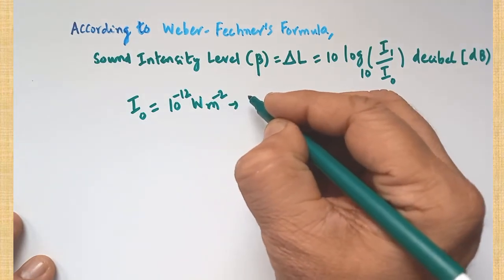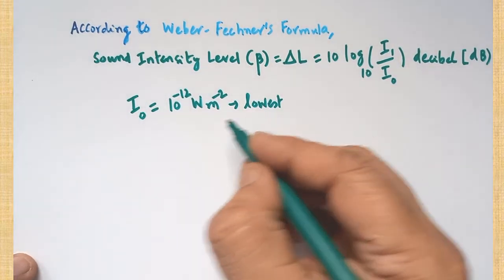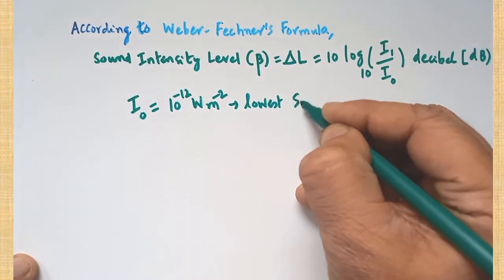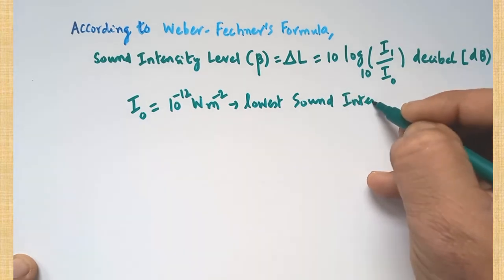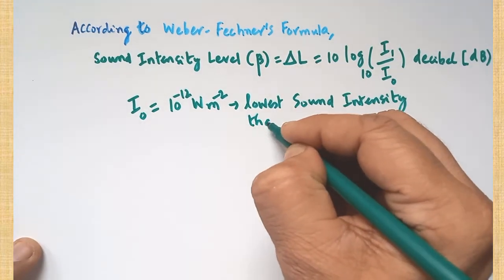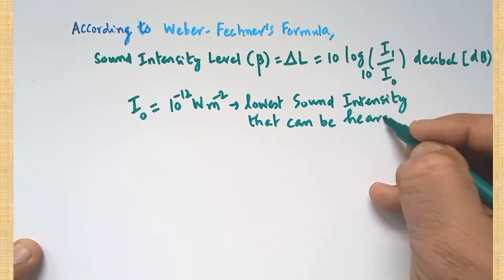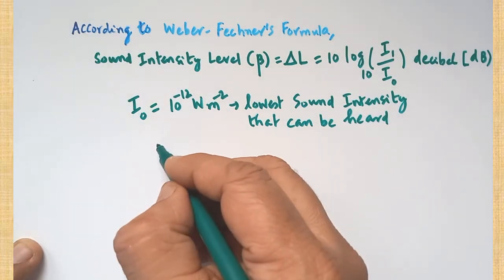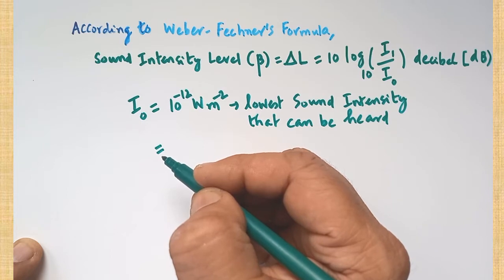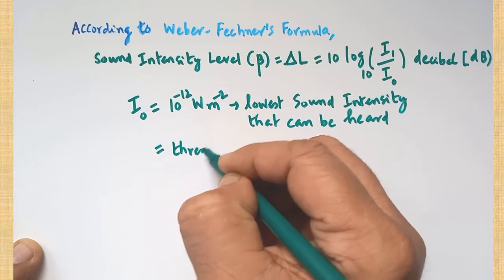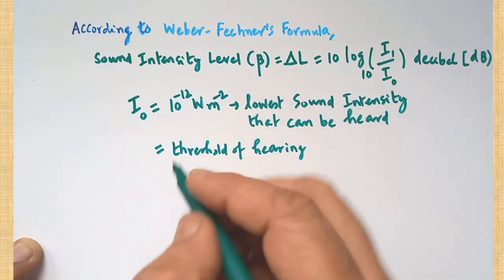I0 is the lowest sound intensity that can be heard by the human ear. Its value is always taken as 10 to the power of minus 12 watts per meter squared. This is called the threshold of hearing. This value must be known; without knowing it we cannot calculate.